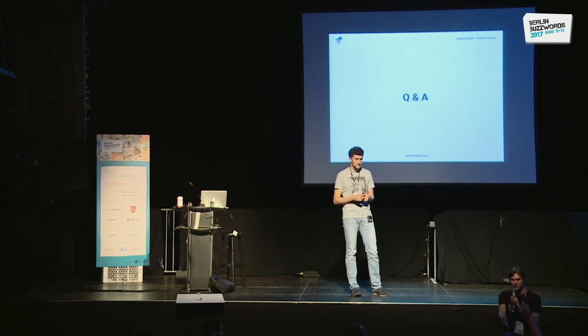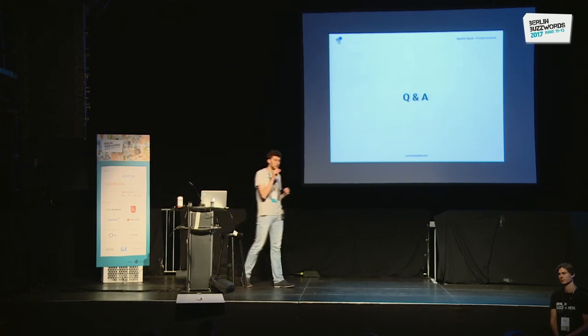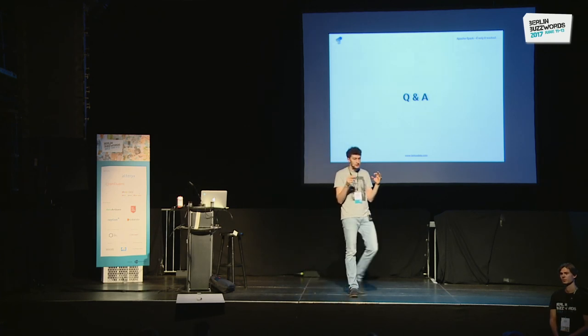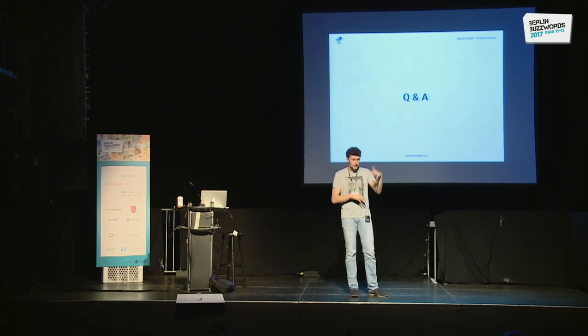Audience question: On your slide about large executors and GC problems — does having too many executors cause GC problems? Speaker: No, it's if the executor itself is very large. If you want to process many tasks in the same machine, you need to give it a lot of memory, and large heaps don't behave very well with GC. You can have big boxes with lots of cores and benefit from them, but for ETL workloads where you're not heavily relying on caching, small executors are usually fine and you avoid the garbage collection problems.